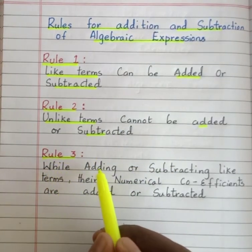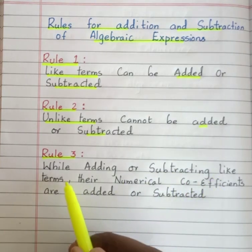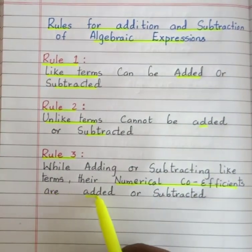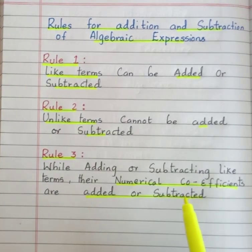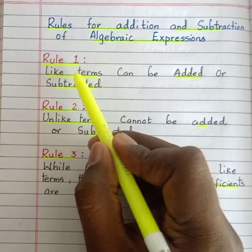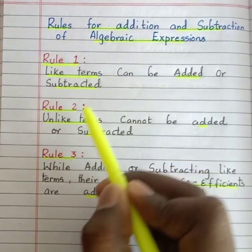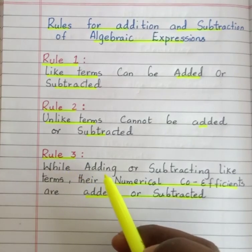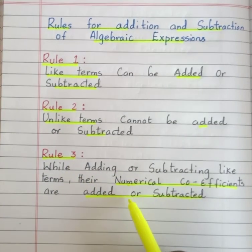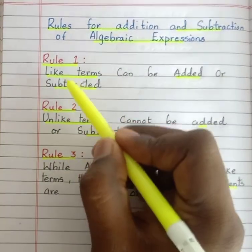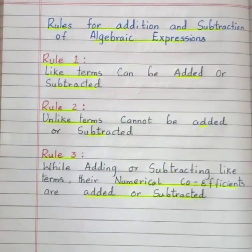Rule 3: While adding or subtracting like terms, their numerical coefficients are added or subtracted. We should know these three rules before we proceed with problems on addition and subtraction of algebraic expressions. Understand these three rules and make a note of them.